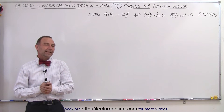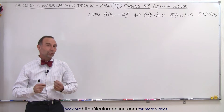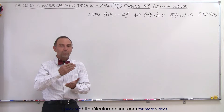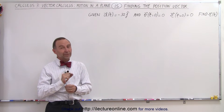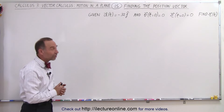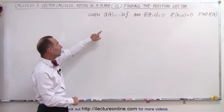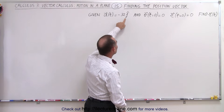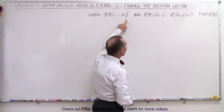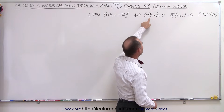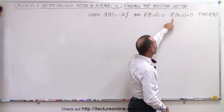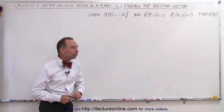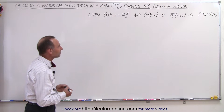Welcome to my lecture online. Now we're going to turn the tables and instead of finding the acceleration vector starting with the position vector, we're going to find the position vector starting with the acceleration vector. The acceleration vector as a function of time is equal to minus 32 in the j direction, and we're given that the velocity at t equals 0 equals 0 and the position at t equals 0 equals 0. So what is the position vector as a function of time?